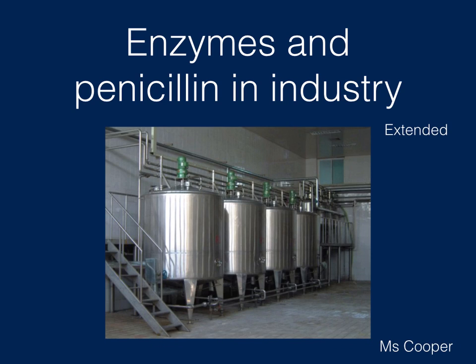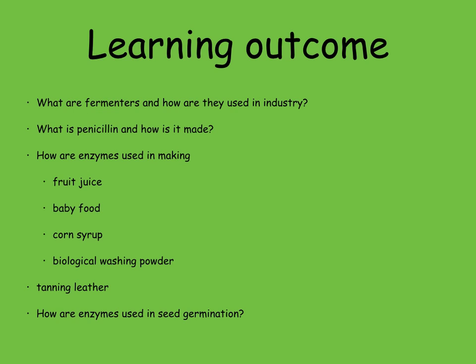In this topic, we're going to look at enzymes and penicillin in industry. By the end of this topic, you'll know what fermenters are and how they're used in industry, what penicillin is and how it's made, how enzymes are used in making fruit juice, baby food, corn syrup, biological washing powders, and tanning leather, and how enzymes are used in seed germination.